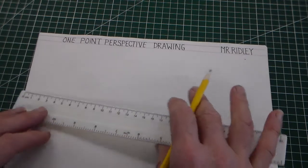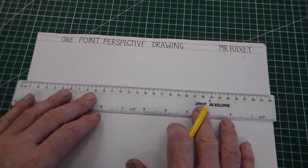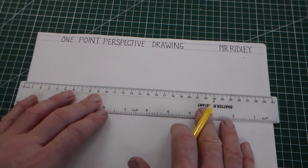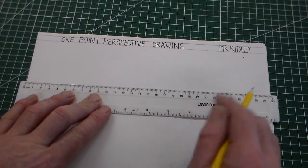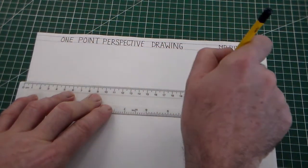Now one point perspective drawing is a way of drawing to give ourselves perspective. Perspective means that as things move further away, they get smaller.